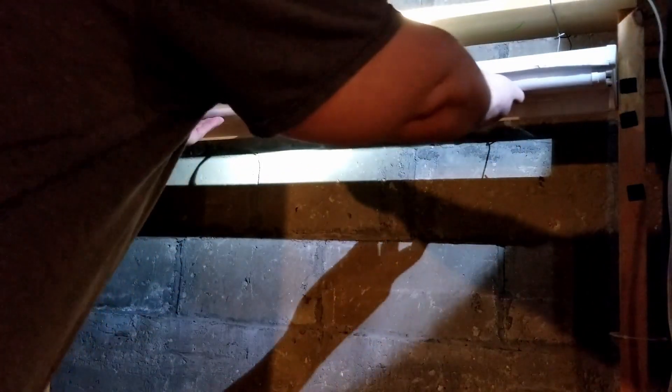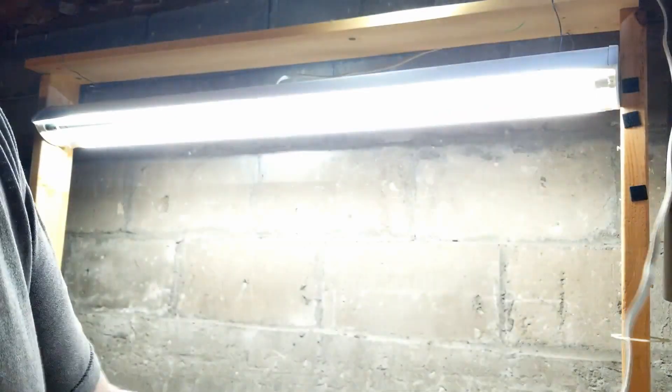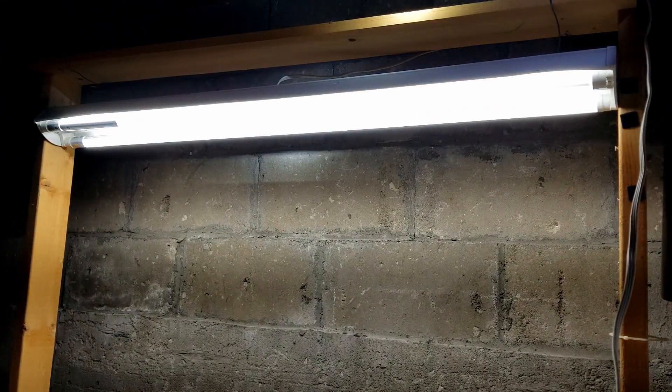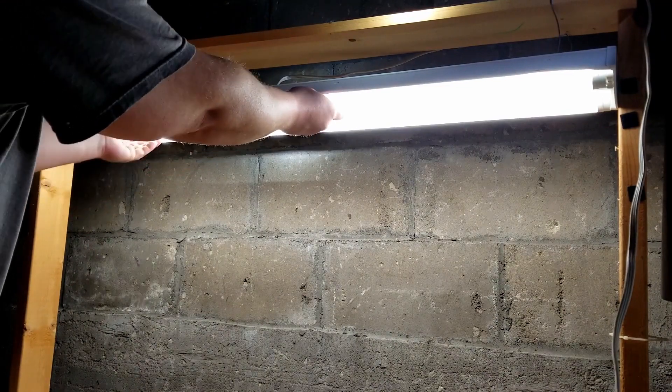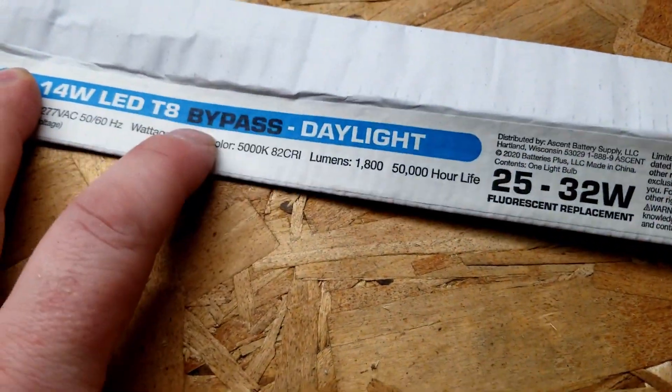Now we can test it - and it'll look like this. One's backward though, we'll just spin that around the other way. Nice bright work area. So just remember, it's pretty simple to do - just make sure if you want to get the bulbs that bypass or get the bulbs that are direct fit.